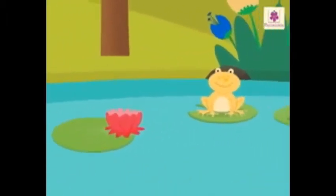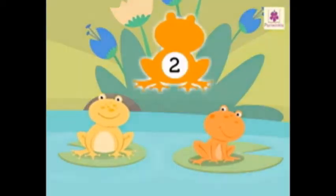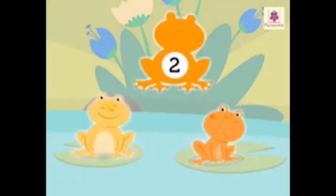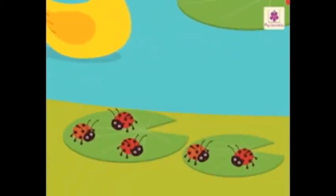Now let's count the frogs. There are 2 frogs. Look, there are beetles on the leaves. Let's count them. 1, 2, 3, 4 and 5. There are 5 beetles on the leaves.